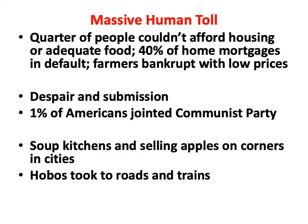We've seen the statistics, but we have to look at the human side. One quarter of the people in the United States could not afford housing or adequate food. 40% of home mortgages went into default — almost one half. Many, many farmers became bankrupt with the low prices they could receive for their products. And there was a real mood across the country of despair and submission, which is quite understandable.